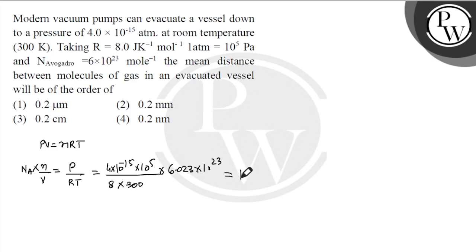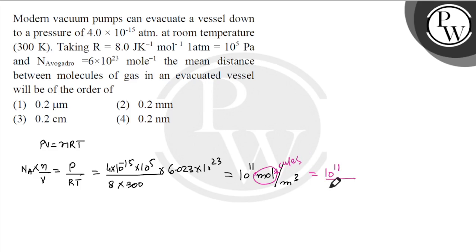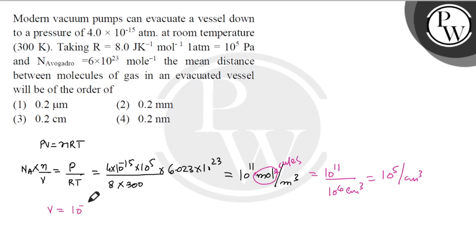This gives us approximately 10¹¹ molecules per centimeter cube. Converting to SI units per meter cube, and then back to per centimeter cube, we get the number of molecules per centimeter cube as 10⁵ per centimeter cube.